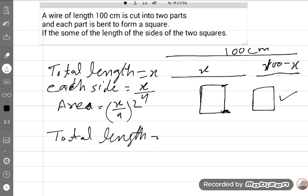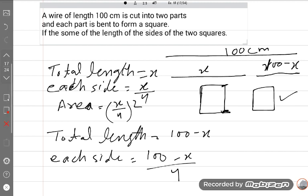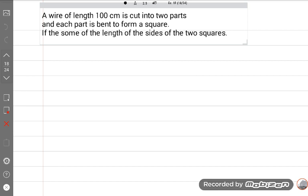Now we will do same thing with the second square. Total length is 100 minus x, so each side will be, because it has four sides, we will divide by 4. The area is (100 minus x upon 4) whole square.